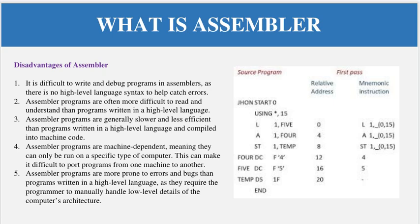So basically, assembler takes the input of the source assembly code and after processing produces the low-level machine language code — zeros and ones. This is the main concept of the assembler. You can think of assembler as a compiler for the assembly language. Just remember: assembler is the compiler of assembly language, and assembly language is a hardware language which we use for managing and communicating with hardware using zeros and ones.